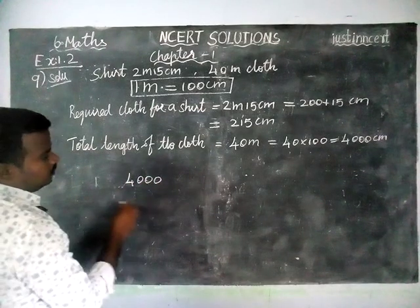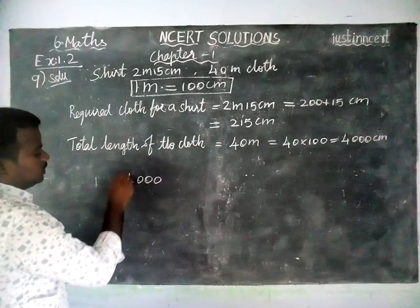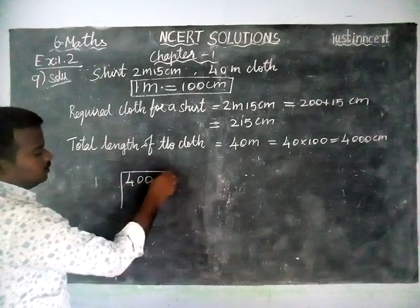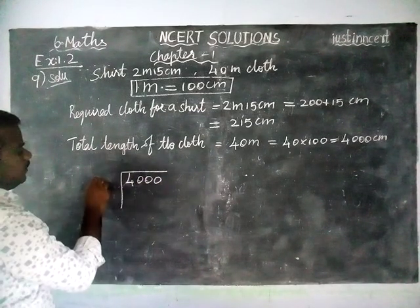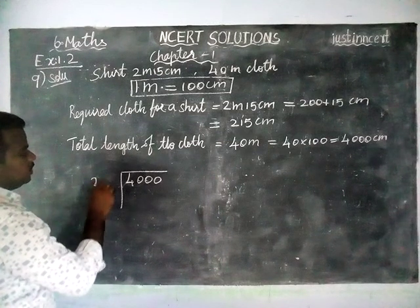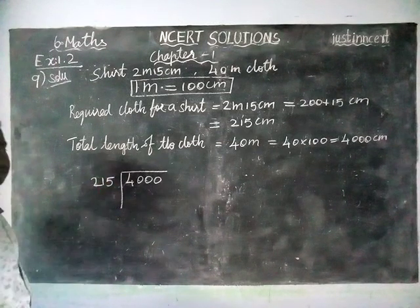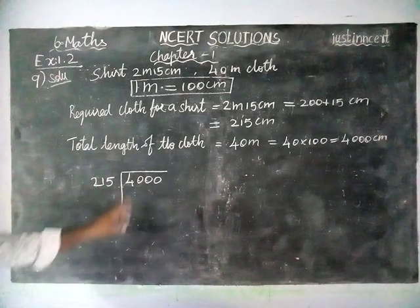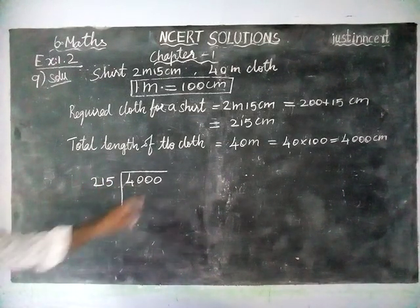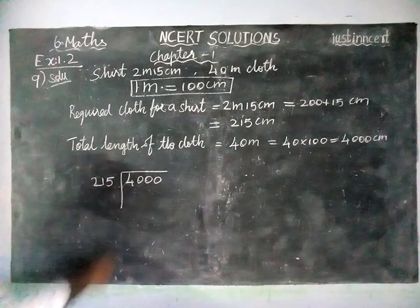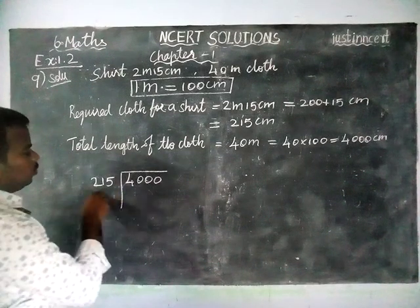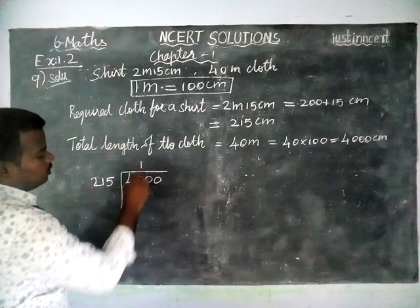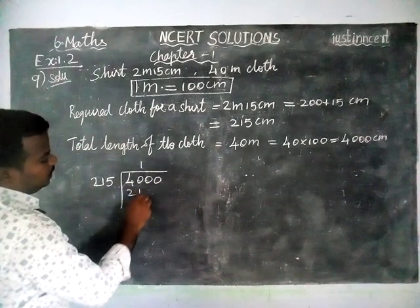We take 4000 and divide it by 215. First, take three digits — 400. In 400, only 1 times 215 fits, giving 215.